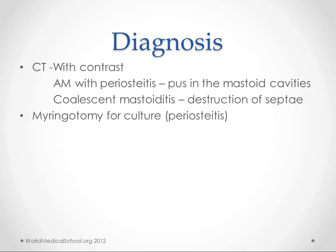When you suspect mastoiditis, you get a CT. It can be done without contrast, but if you suspect spread you can use contrast to see where the infection is going. This also helps distinguish between acute mastoiditis with periostitis — meaning pus in the mastoid cavities with intact bony septae — versus coalescent mastoiditis, where those bony septae have been destroyed, leaving one large pool of pus in the mastoid area.